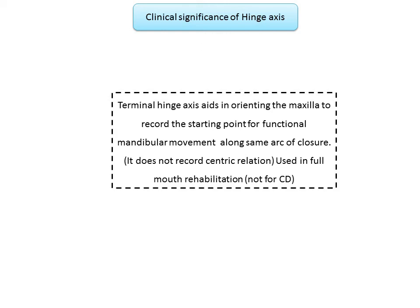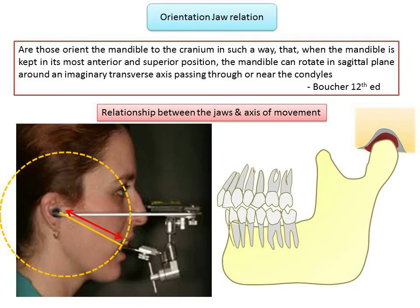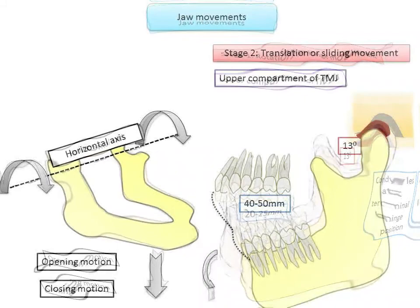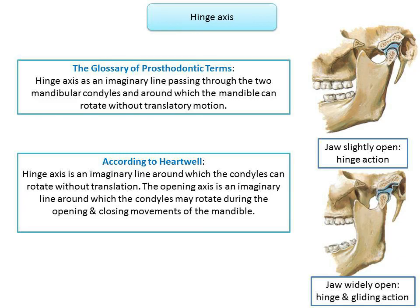This was a broad overview of hinge axis and orientation jaw relation. In a separate presentation we'll discuss the techniques for locating the hinge axis and face bow transfer, which will help in understanding the topic better. Please like, share, comment, and subscribe to the channel.